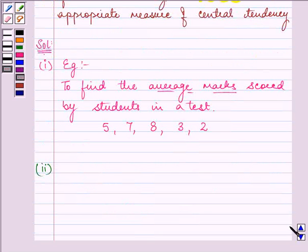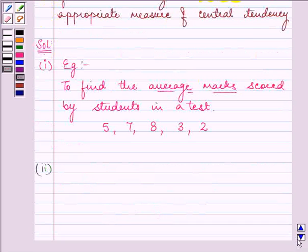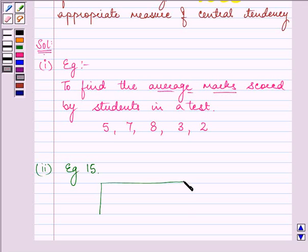In the second case, we need to show that mean is not an appropriate measure of central tendency but median is. The example which can be cited for this is example 15 of your book, in which with the help of the given data we were able to find out the mean, median, and mode.